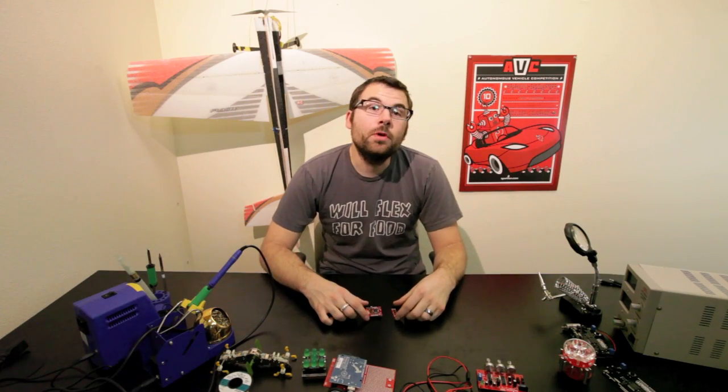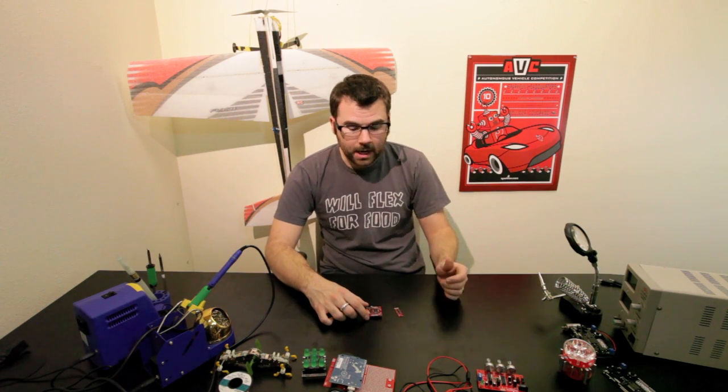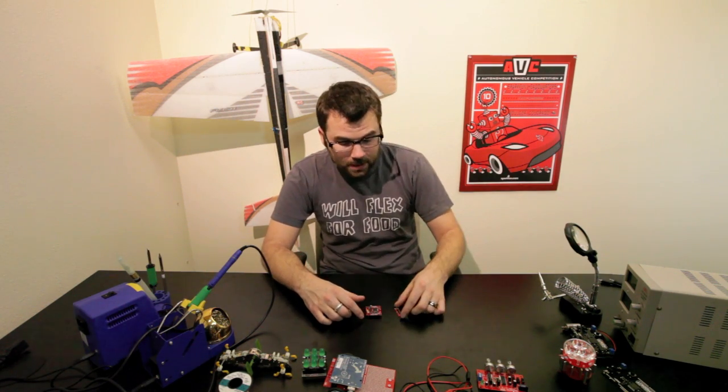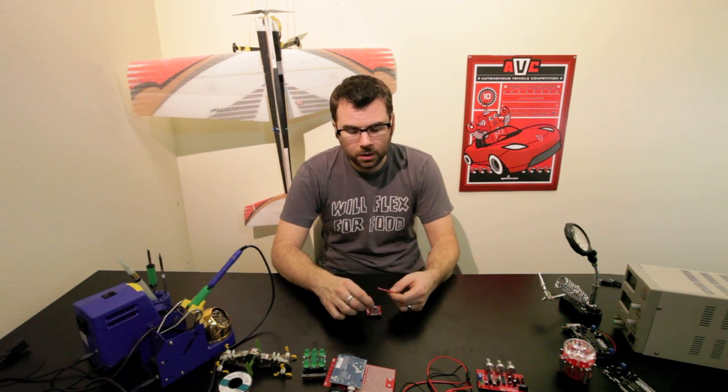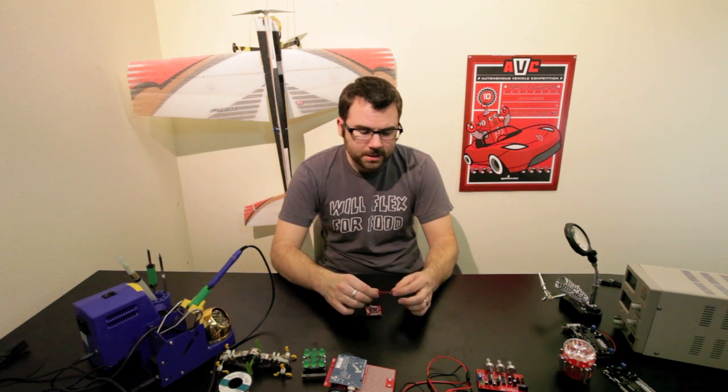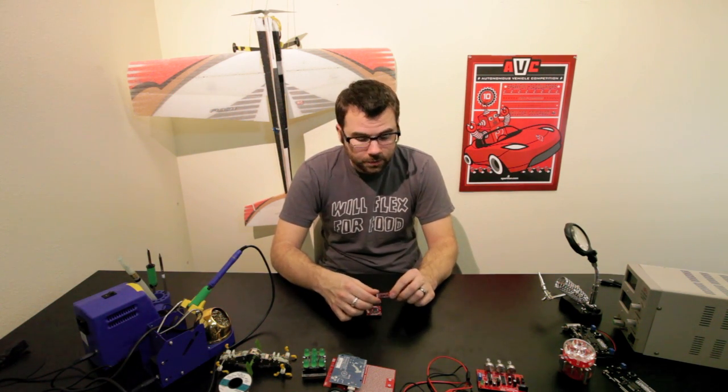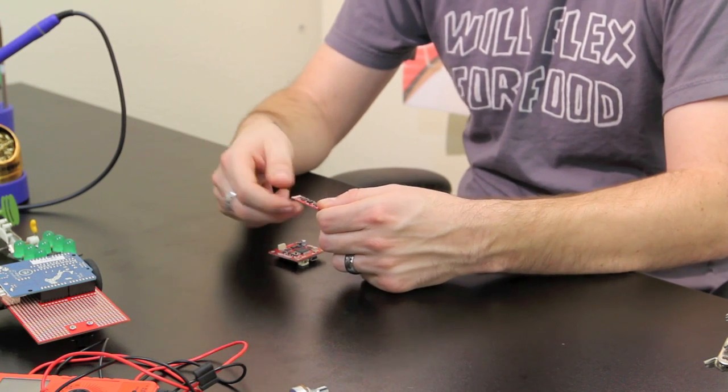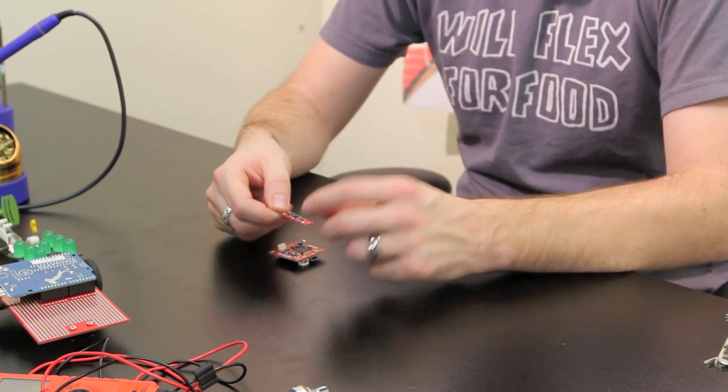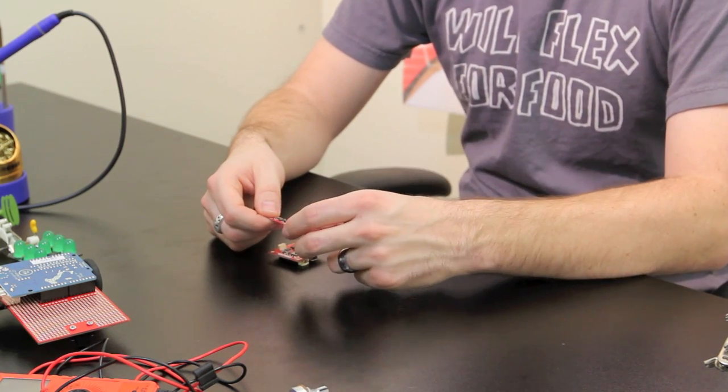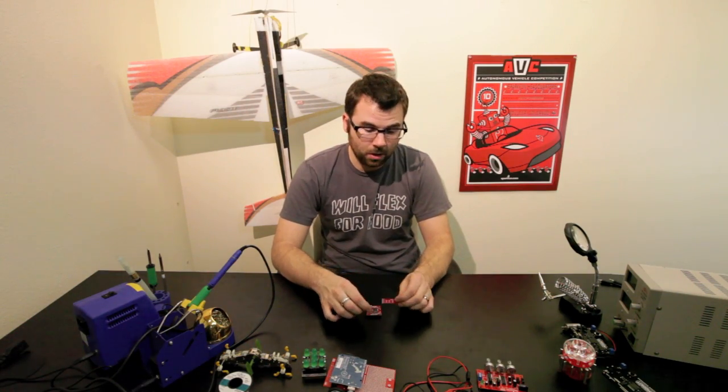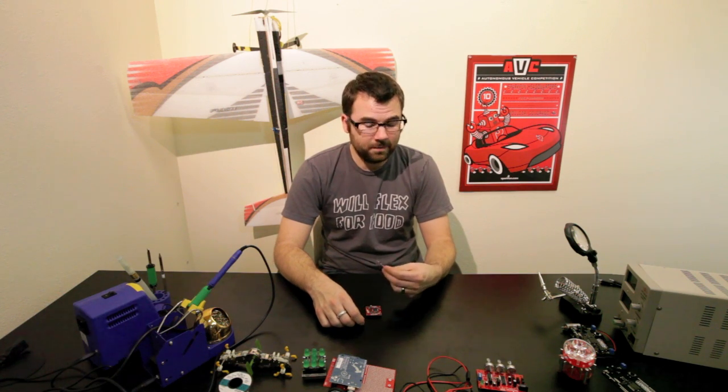So we've got a couple new IMUs to talk about. We've got the 9DOF stick and then we've got the ultimate IMU. You might have seen the 9DOF stick in the rocket launch video we did the other day. Basically it's just a 9 degrees of freedom board with a power regulator and an I squared C interface. We've got a three axis accelerometer, three axis gyro and magnetometer on there. It's also half the thickness of our normal board so this thing is light and you can fit it anywhere.